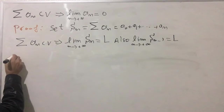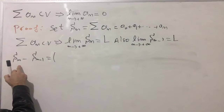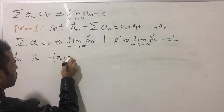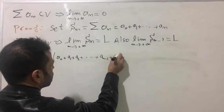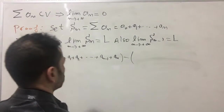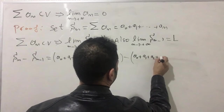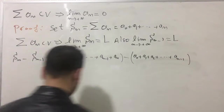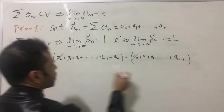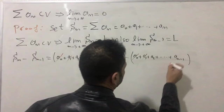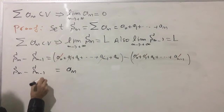Now I'm going to calculate the difference S_n minus S_{n-1}. S_n equals a_0 plus a_1 plus a_2 and all the way down to a_{n-1} plus a_n, minus S_{n-1} which is a_0 plus a_1 plus a_2 and all the way down to a_{n-1}. I'm going to cancel most of the terms: a_0 cancels out, a_1 cancels out, all the way down to a_{n-1} cancels out as well. So S_n minus S_{n-1} equals a_n.